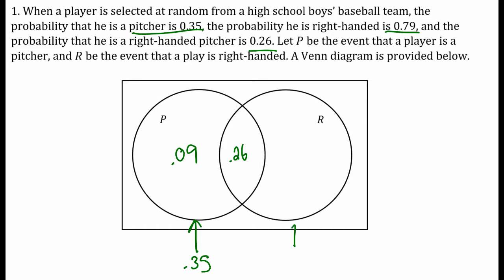The entire right-handed circle is 0.79. I used up 26% of that 79%, so that leaves me with 53%, so 0.53. Well what about the people who are not pitchers and also not right-handed? We should probably figure out what's left over. So 0.09 plus 0.26 plus 0.53, there's 88% that falls into pitcher or right-handed, which means there's 12% that are left over.